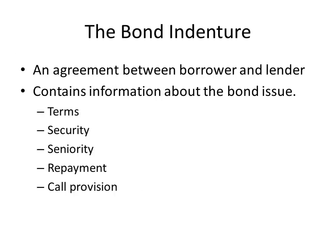Now let's talk about the bond indenture. An indenture is an agreement. In the early history of the United States, we had what were called indentured servants — usually young men who would agree to serve for little pay and food, shelter, and training in exchange for a boat ticket to the New World. The contract they signed was called an indenture. These arrangements are no longer popular, but the indenture lives on in the world of the bond.